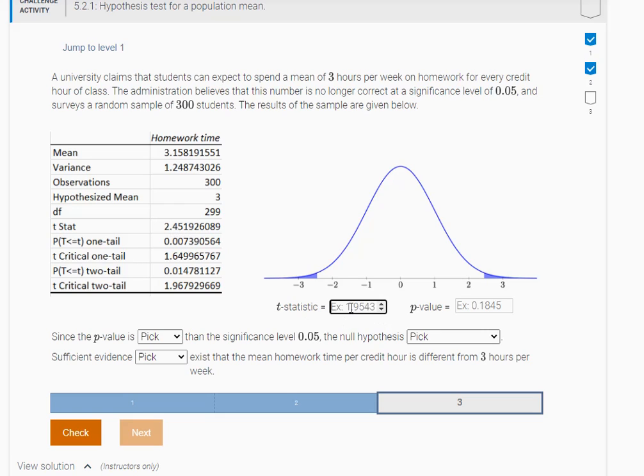So the test statistic here we're gonna put in 2.4519, and what is the p-value? Well again we said this was a two-tailed test, right? So it's gonna be this p-value here. So it's gonna be 0.01478.